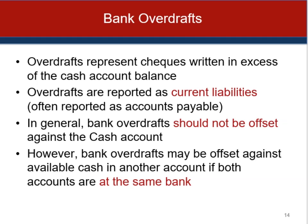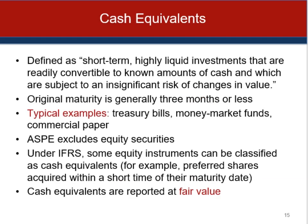It is possible that bank overdrafts could be offset against available cash in another account in the same bank, because usually the banking arrangement is one whole contract and there's no contractual restriction about paying bank overdrafts from other cash accounts in the same bank.